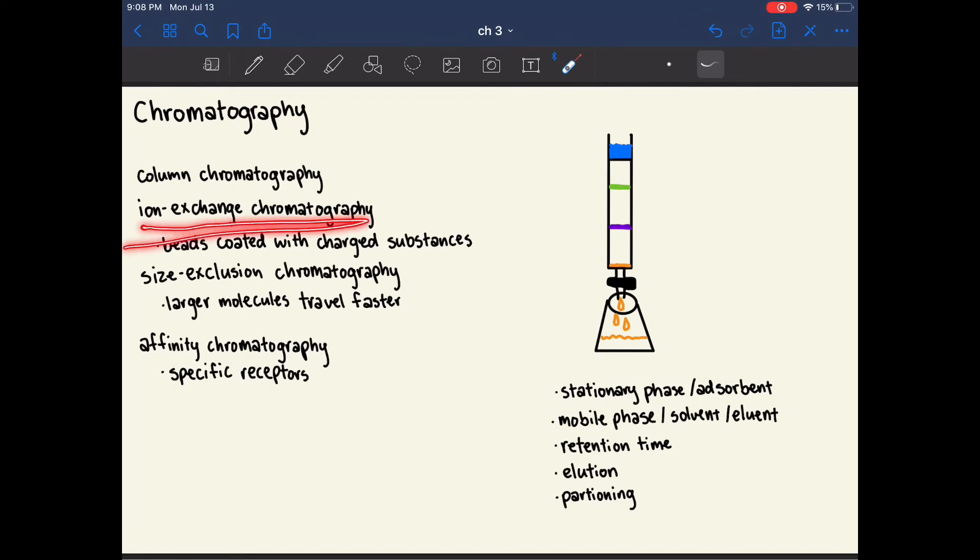In ion exchange chromatography, the beads or the particles of the stationary phase are charged. So substances of the opposite charge are held onto the column longer, and substances that are the same charge as the stationary phase will travel through much faster.